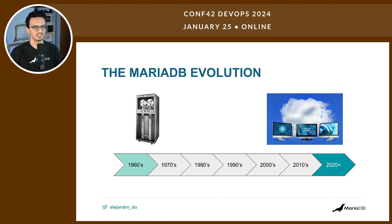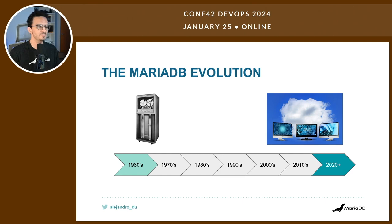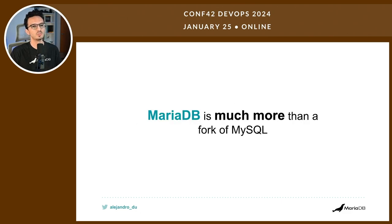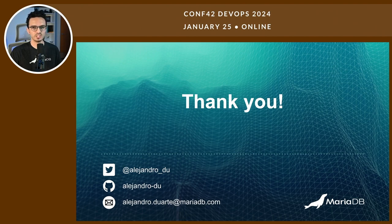75% of the Fortune 500 companies use MariaDB, and MariaDB has more than 1 billion downloads on Docker Hub. In conclusion, we saw MariaDB's evolution from the 1960s — storing data on tape — to today where you can have a fully managed database running in the cloud. Nobody says Ubuntu is a fork of Debian or SQL Server is a fork of Sybase unless making a historical remark. In the same way, MariaDB is much more than a fork of MySQL. Try it out — it's a lot of fun. Thank you and enjoy the rest of the conference.